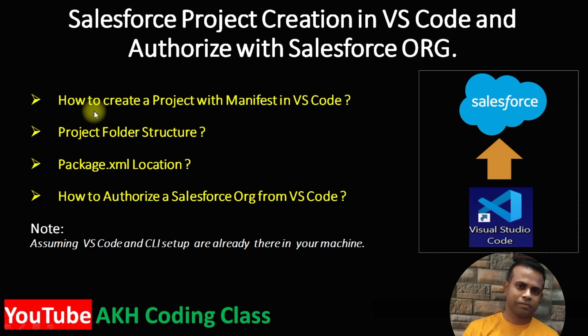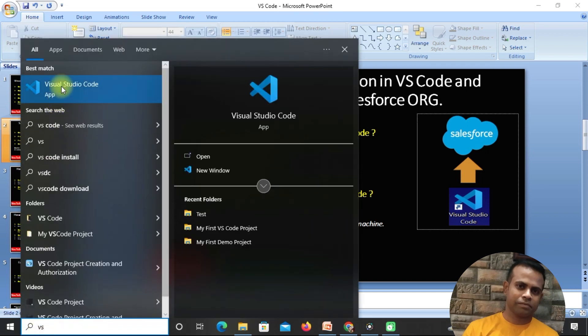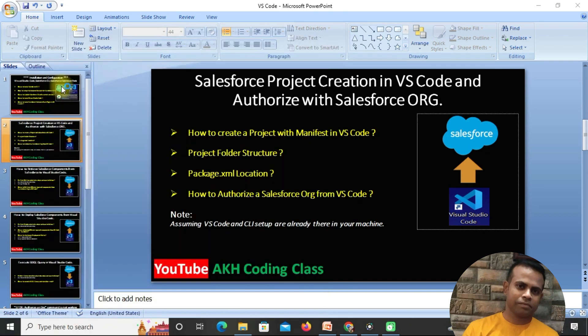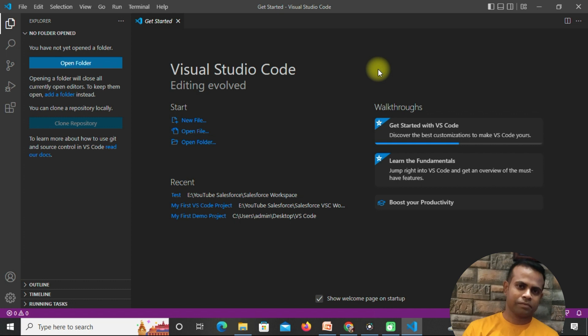Our first step is to create a manifest project in VS Code. Go to the VS Code editor — you can open it from your desktop icon by double-clicking, or by typing 'VS Code' and clicking it. Once you click, the VS Code editor will open and in the very initial phase it will look like this.